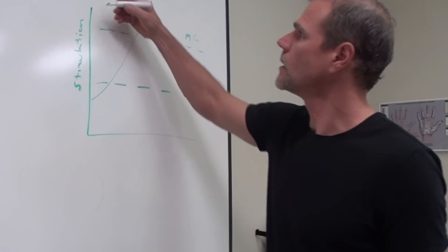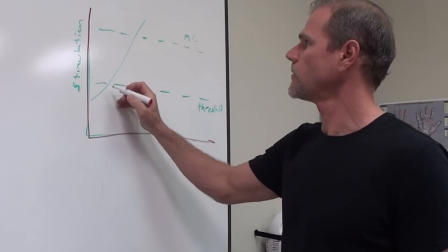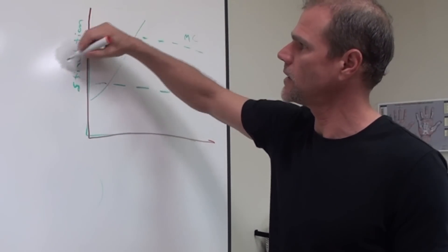So metabolic capacity, just for the sake of this coming out a little bit darker. This is a graph, and this is brain stimulation.